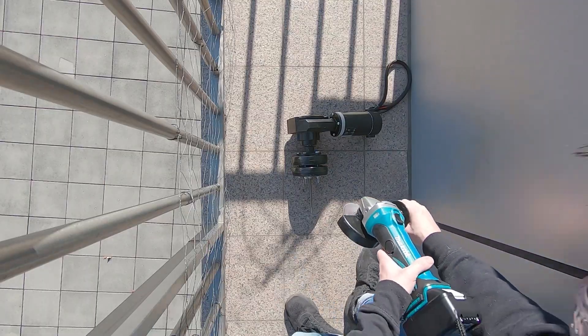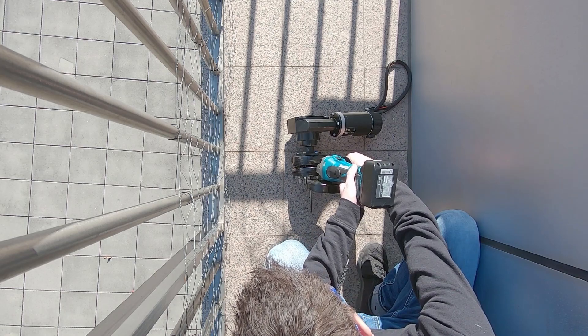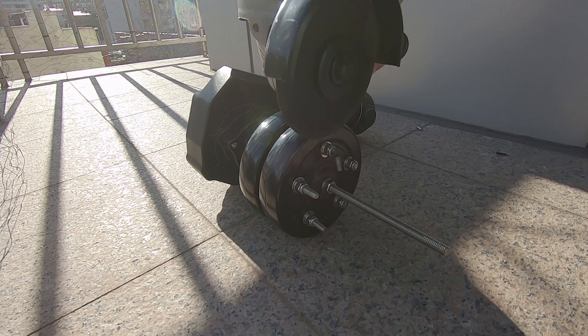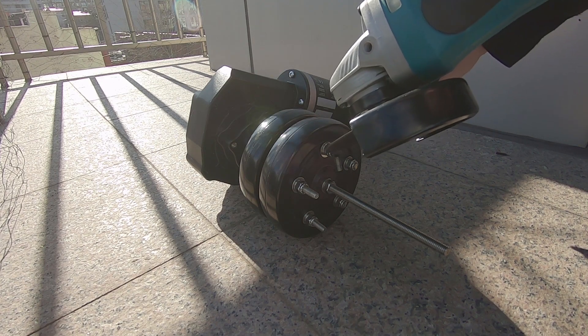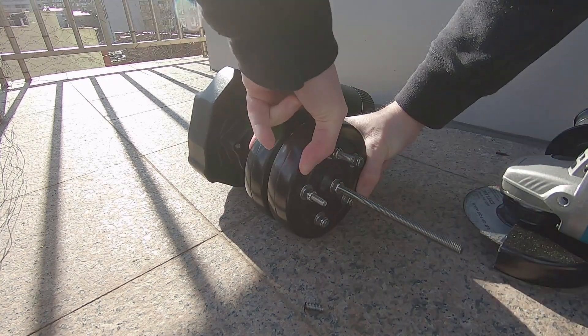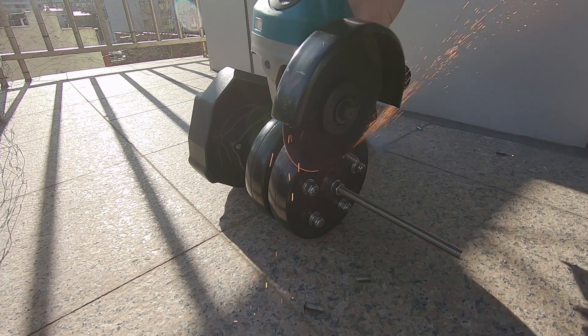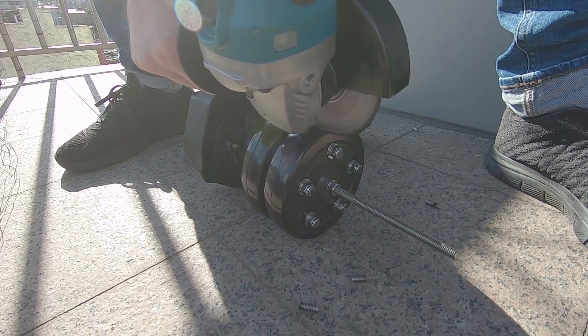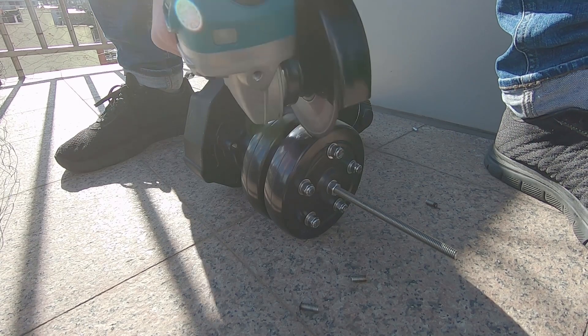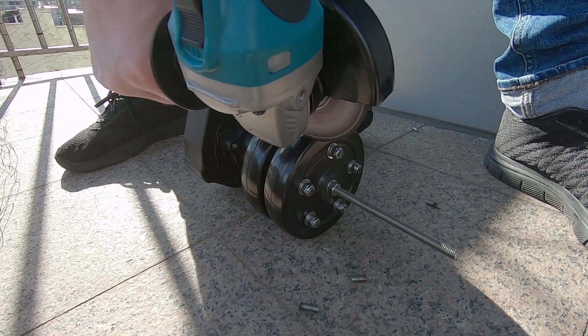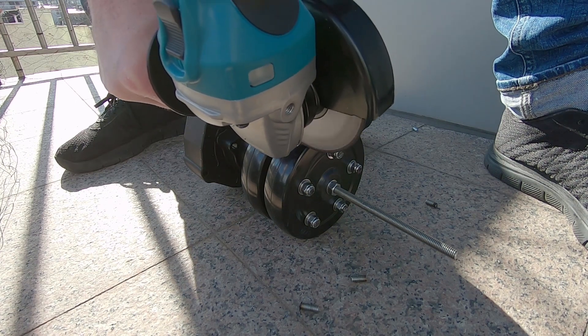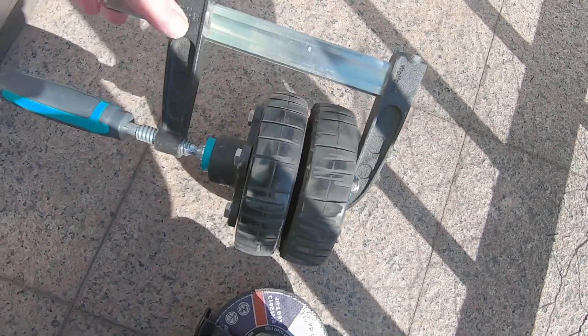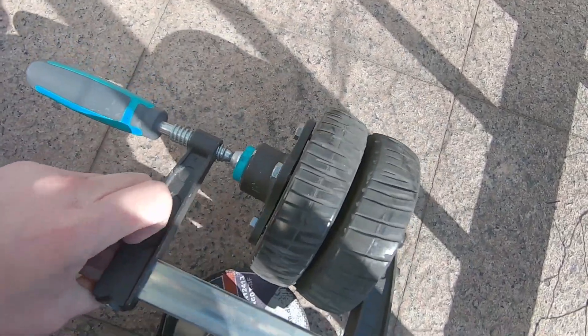Then I went outside and used my angle grinder to cut the bolts to the correct size. I also cut some threads into the tire to have some more grip. I also recommend doing this outside because it smells really really bad. I removed the tires from the motor to finish the thread cutting.